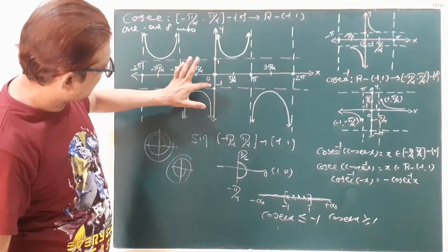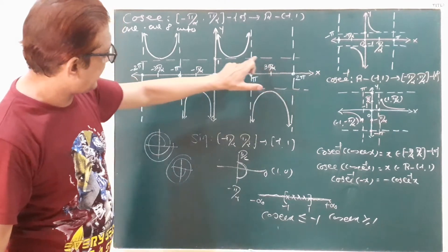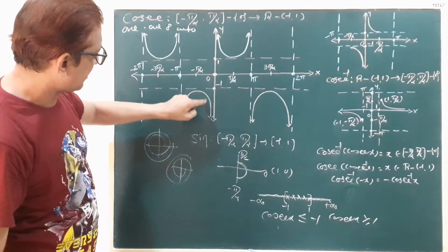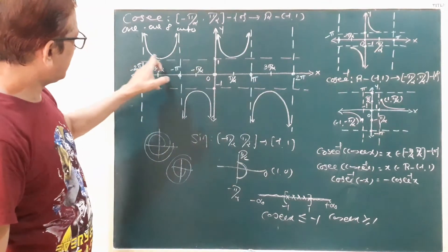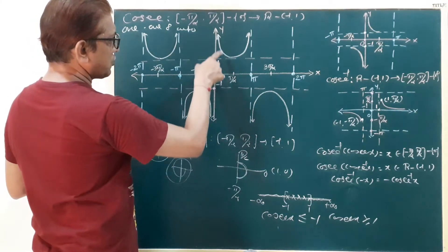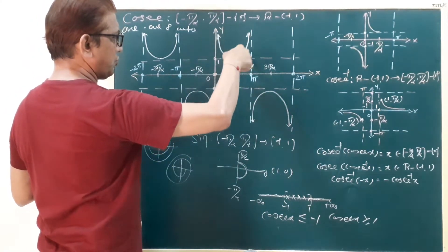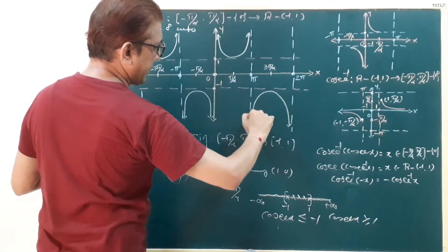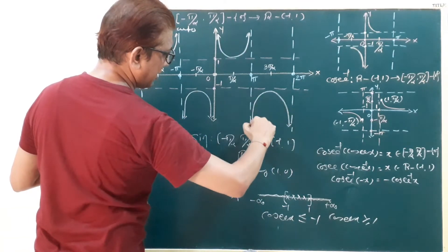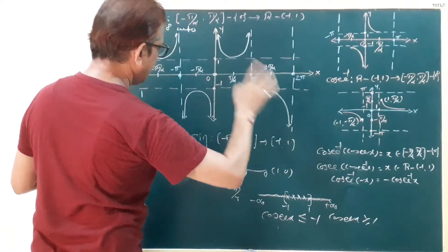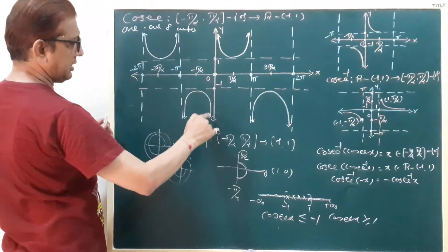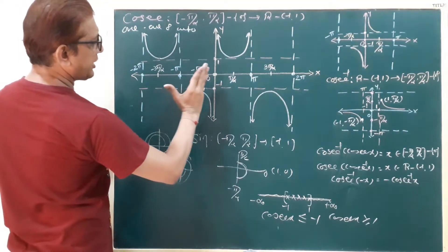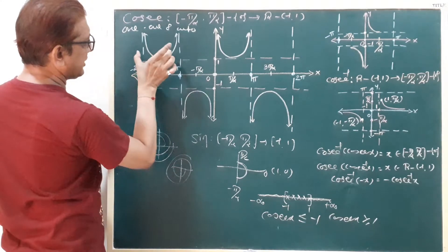The maximum value is 1 and minimum value is minus 1. Draw a horizontal line — it touches the graph at 1 and at minus 1. The graph repeats: from 0 to pi, pi to 2 pi, and similarly 0 to minus pi, minus pi to minus 2 pi. This is your cosecant function graph.